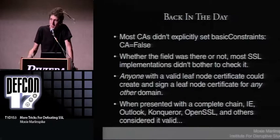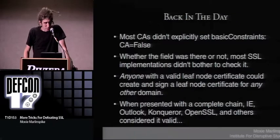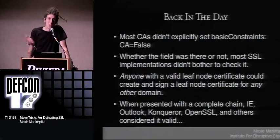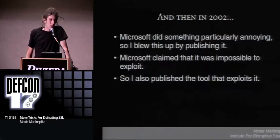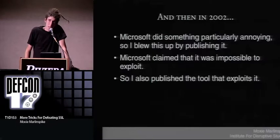The problem was that back in the day, most certificate authorities would issue certificates and just leave the basic constraints field out. You'd think an SSL implementation would assume the conservative position — that an absent field means it's not a CA certificate. But most SSL implementations just didn't bother to check it. This meant anyone with a valid leaf node certificate for any domain could create and sign a certificate for any other domain. When presented with this chain, Internet Explorer, Konqueror, Outlook, OpenSSL, and many others all considered it completely valid.